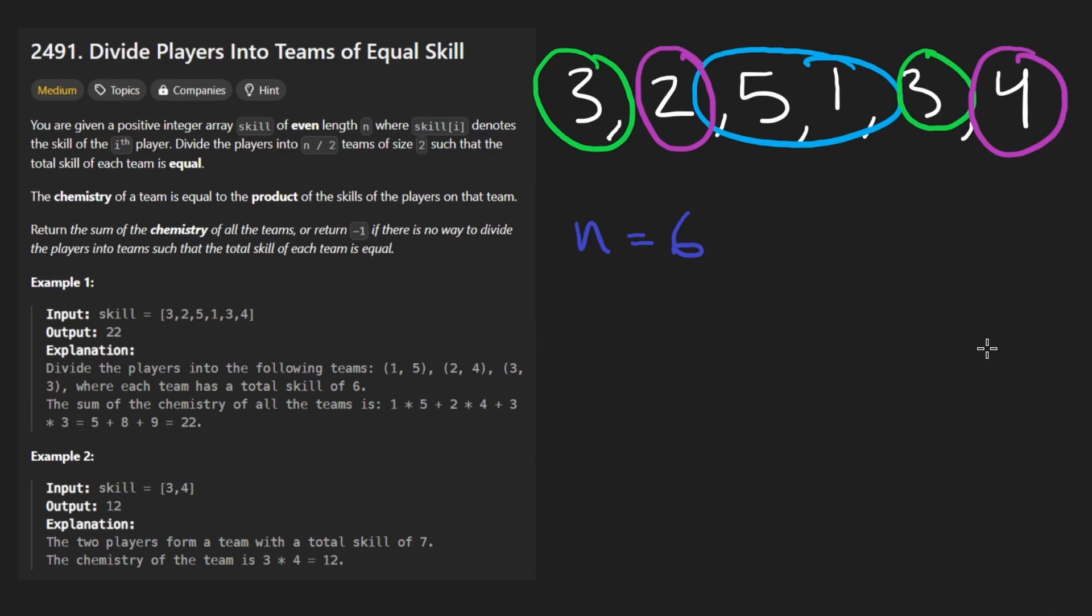Now, if we go through each element, one valid way to solve this problem is kind of like two sum 2 or container with most water. I think two sum 2 is probably the more similar problem. If you are looking for one, I would check that problem out. I have a video for it. But if we took all of the elements and sorted them, we'd get something like this, 1, 2, 3, 3, 4, 5.